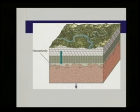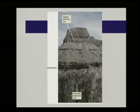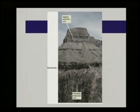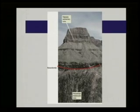In the field, a nonconformity is shown where Precambrian metamorphic rocks are below and sedimentary rocks are deposited above — it is not an intrusion, there is no baked zone. The Precambrian is anything older than 542 million years, and the Paleozoic sedimentary rocks above are younger than that. Depending on which period they were deposited in, there can be a gap of several hundreds of millions of years. The surface separating the older metamorphic rocks from the younger Paleozoic sedimentary rocks is the nonconformity.